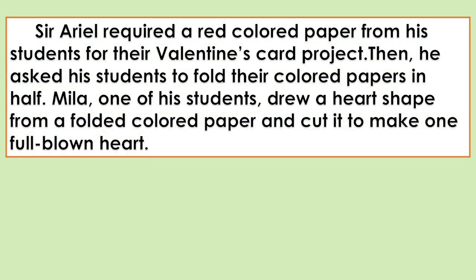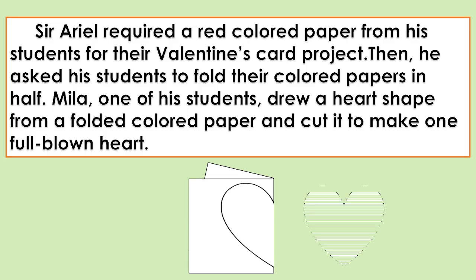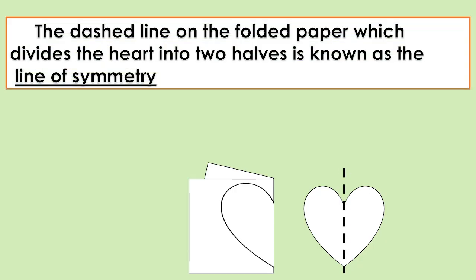Sir Ariel required a red colored paper from his students for their Valentine's card project. He asked his students to fold their colored papers in half. Mila, one of his students, drew a heart shape from a folded colored paper and cut it to make one full blown heart. The dashed line on the folded paper, which divides the heart into two halves, is known as the line of symmetry.